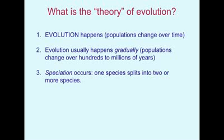Speciation occurs. You don't just see one lineage changing over time. Instead, you see lineages branch. Here's a case of what we call splitting. The formal word is speciation, where original lineage A branches into two new descendant species, B and C.